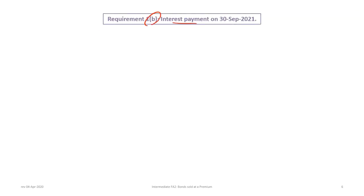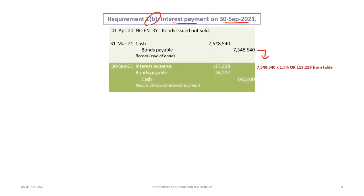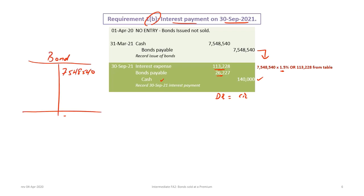For requirement 1B, the interest payment on September 30th: we take the bond payable balance of $7,548,540 times 1.5%, giving interest expense of $113,228. Cash is always $140,000, so the difference is a debit to bond payable of $26,227. Because the bond payable starts at $7,548,540 and must reach $7,000,000 at maturity, we need a series of debits to amortize the premium, starting with this $26,227.